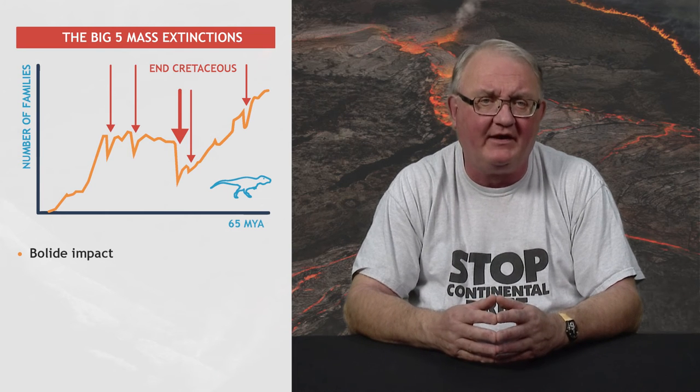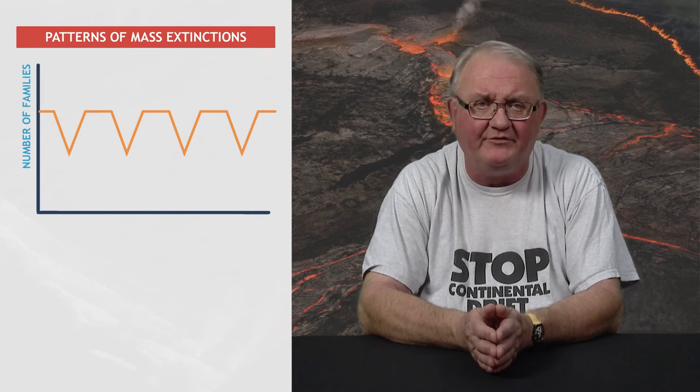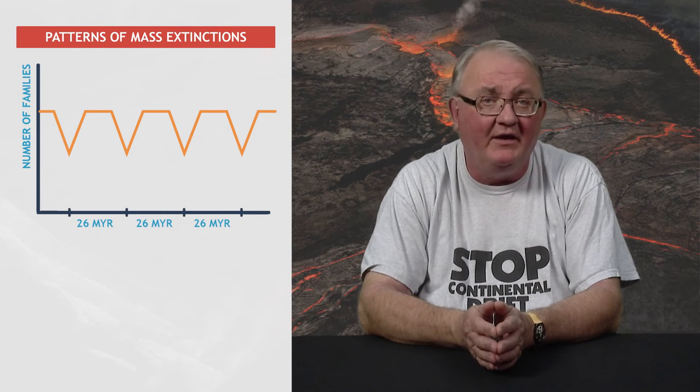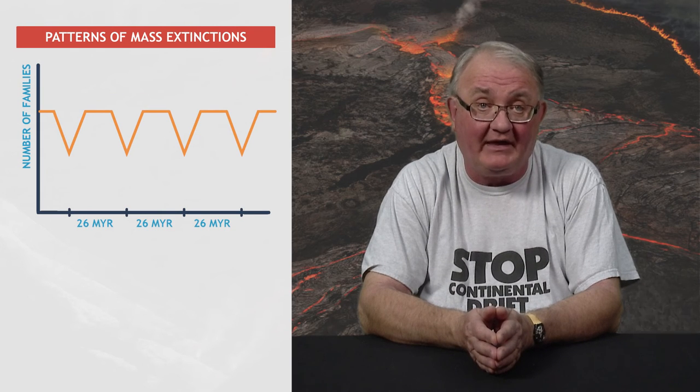A definite pattern of the occurrence of mass extinctions was first suggested in the late 1970s. However, it did not gain statistical support until early in 1984 in a paper published by David Raup and Jack Sepkoski, both of the University of Chicago. Raup and Sepkoski analyzed the last appearance data, that is extinctions, of marine families and found strong statistical indications of a periodicity of mass extinctions, with a frequency of about every 26 million years since the end of the Permian.